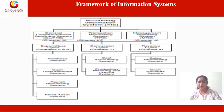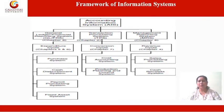The second sub-system includes the general ledger and financial reporting system, which produces the traditional financial statements such as the income statement, balance sheet, statement of cash flows, tax returns and other reports required by law. The third sub-system includes the management reporting system, which provides internal management with special purpose financial reports and information needed for decision making, such as budgets, variance reports and responsibility reports.